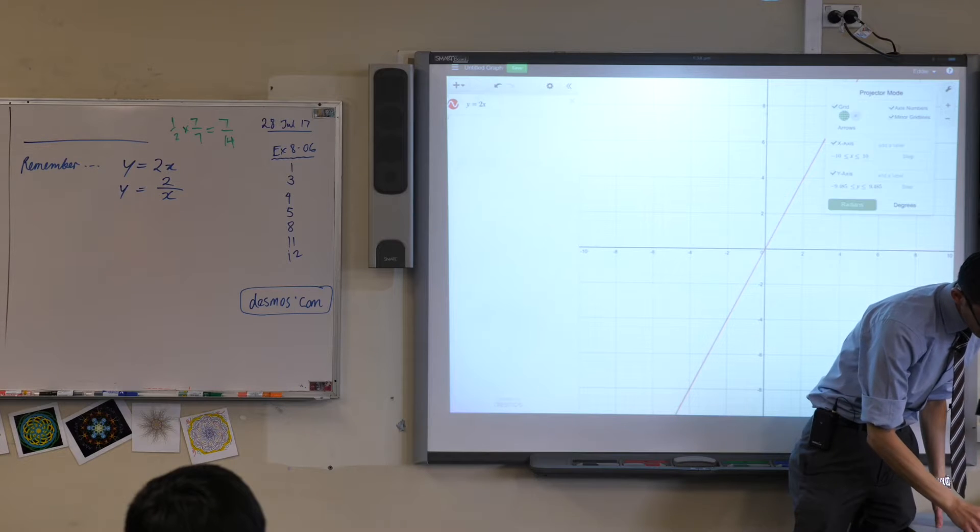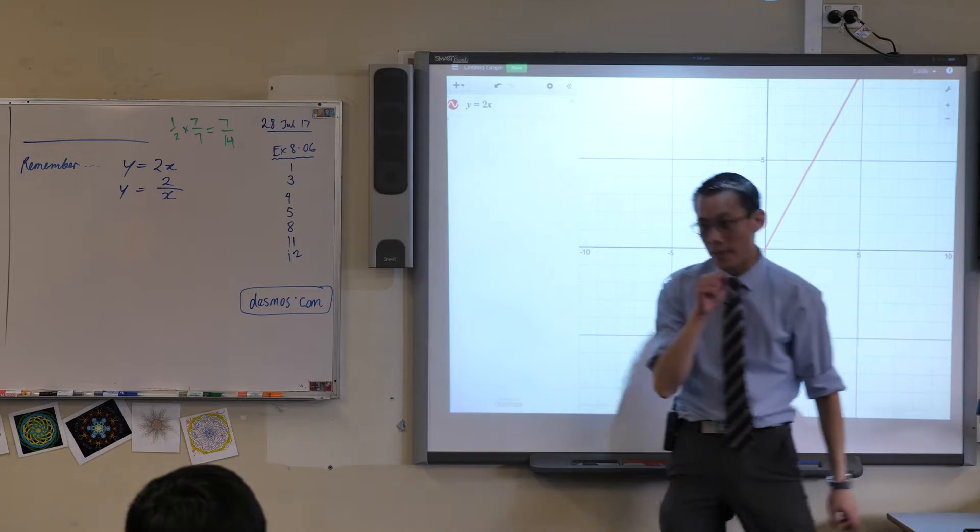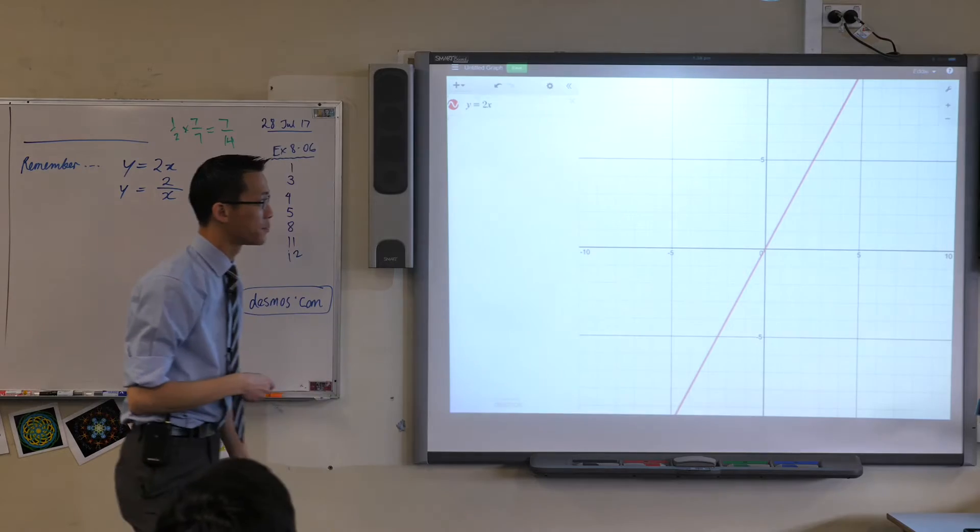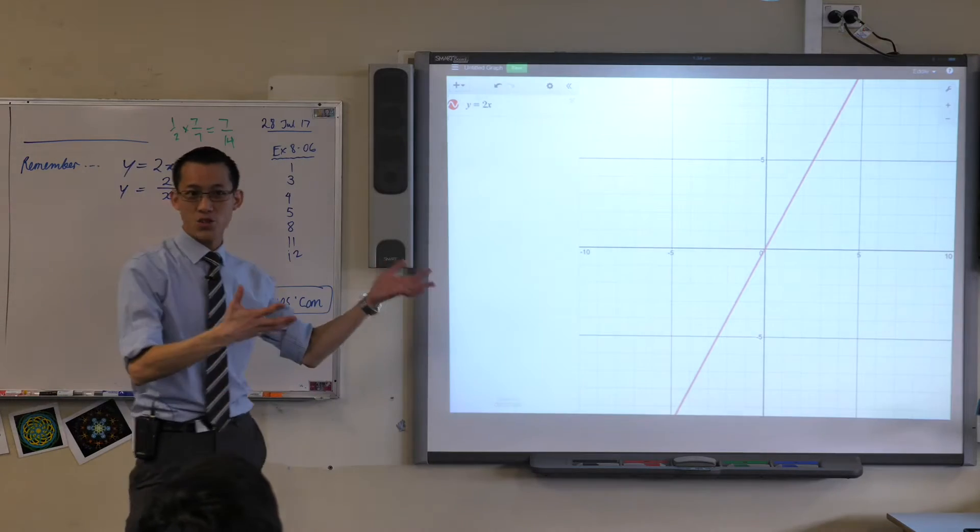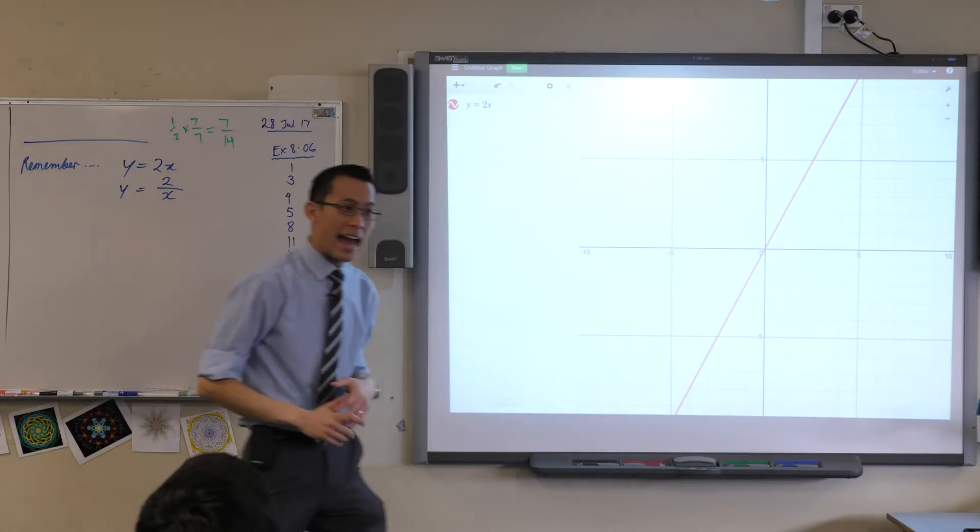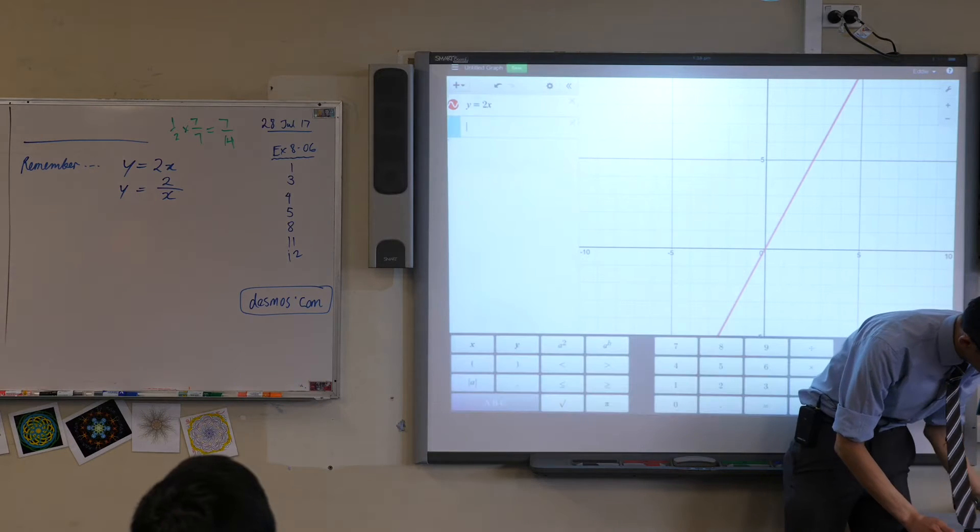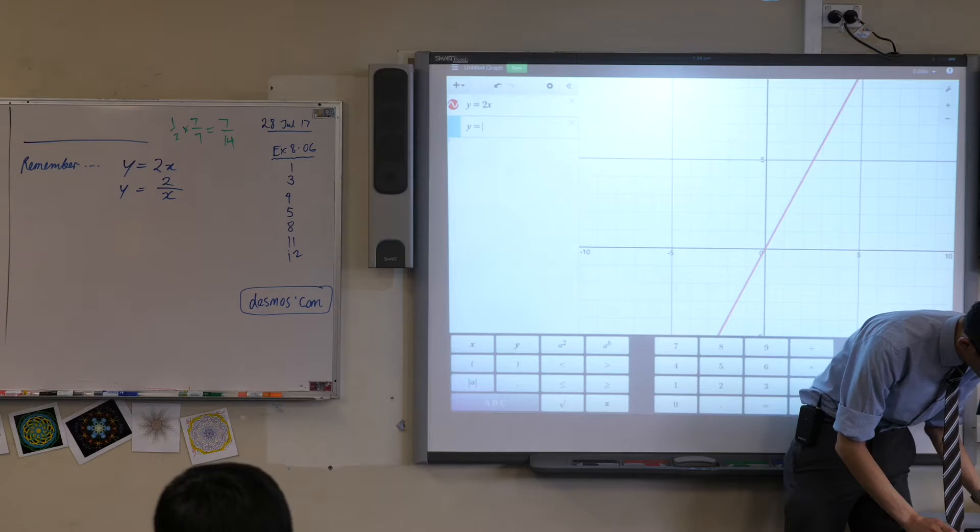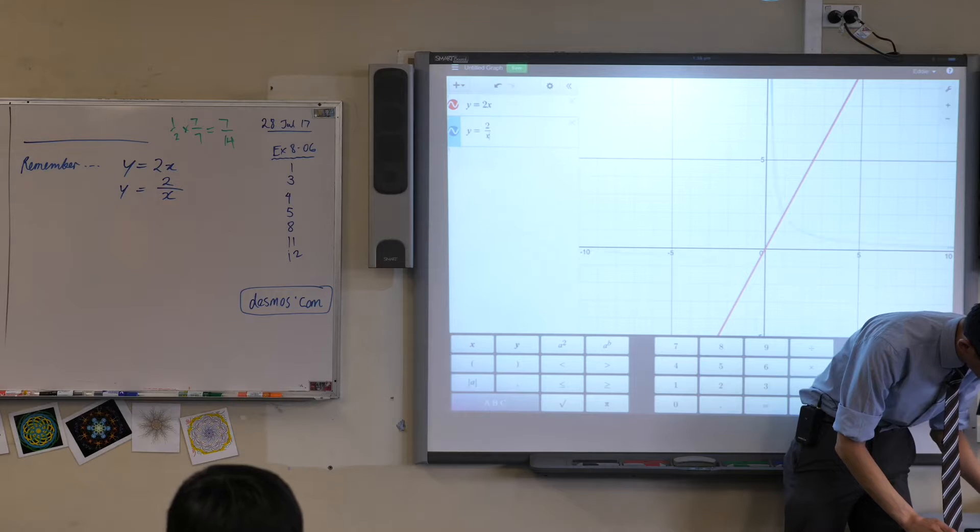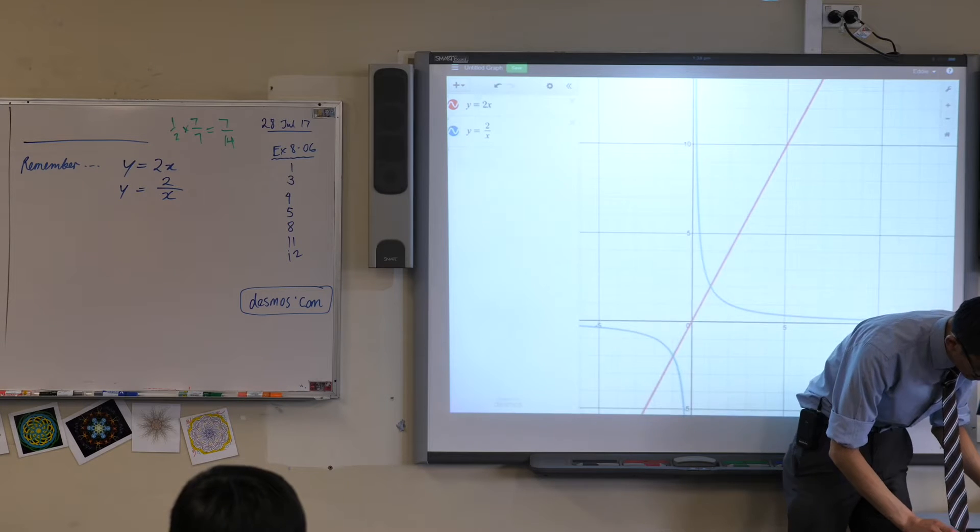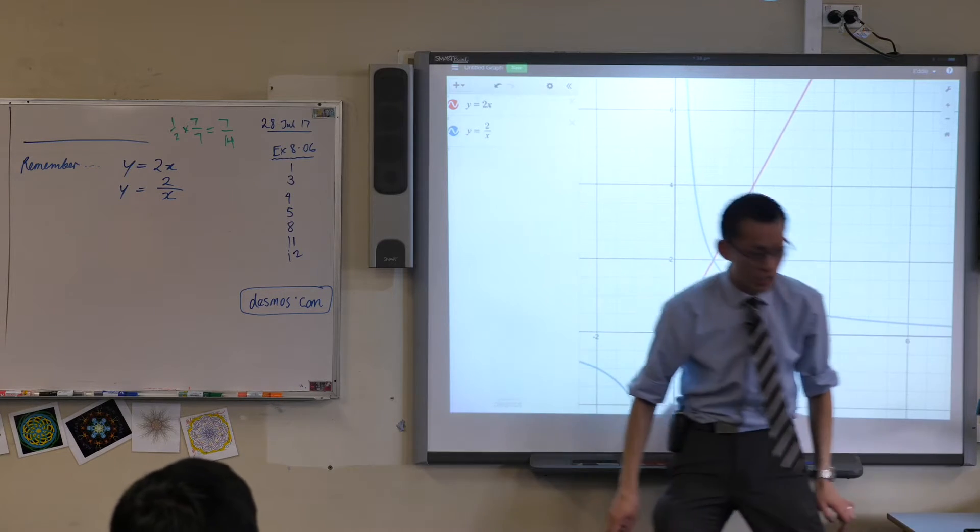There's y equals 2x. This is a straight line, so we've seen this before. And if at the same time I also draw, you can just press enter, y equals 2 divided by x, you get this. Just kind of interesting.